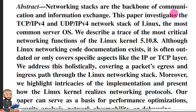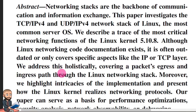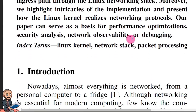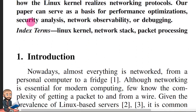Here's the abstract. Networking stacks are the backbone of communication and information exchange. This paper investigates the TCP, IPv4, and UDP network stack of Linux, the most common server OS. We describe a trace of the most critical network functions of the Linux kernel 5.10.8. Although Linux networking code documentation exists, it is often outdated or only covers specific aspects like the IP or TCP layer. We address this holistically, covering a packet's egress and ingress path through the Linux networking stack. Moreover, we highlight intricacies of the implementation and present how the Linux kernel realizes networking protocols. Our paper can serve as a basis for performing optimization, security analysis, network observability, or debugging.